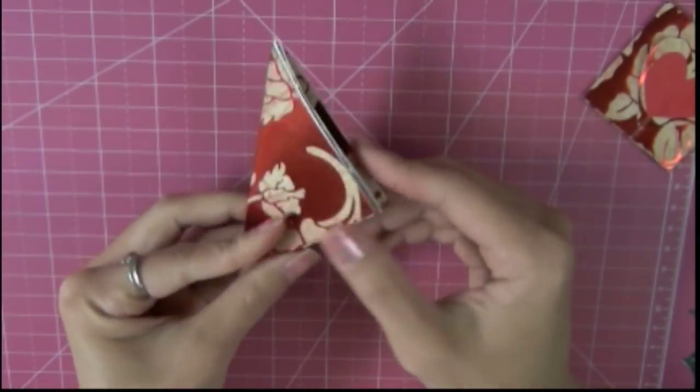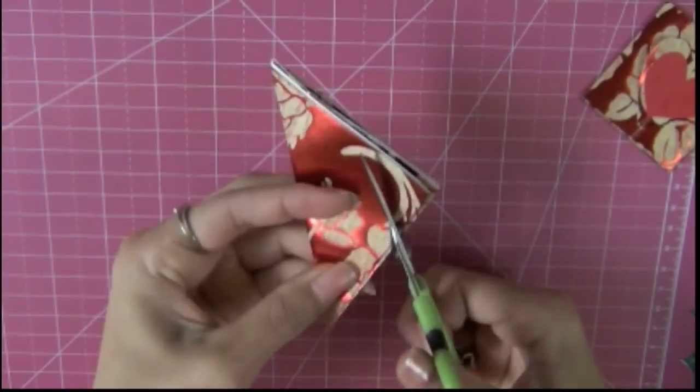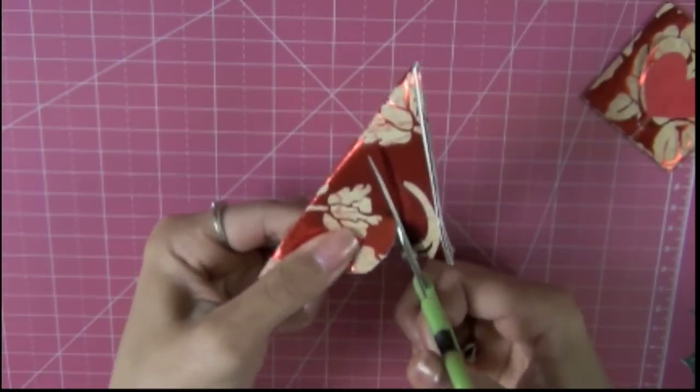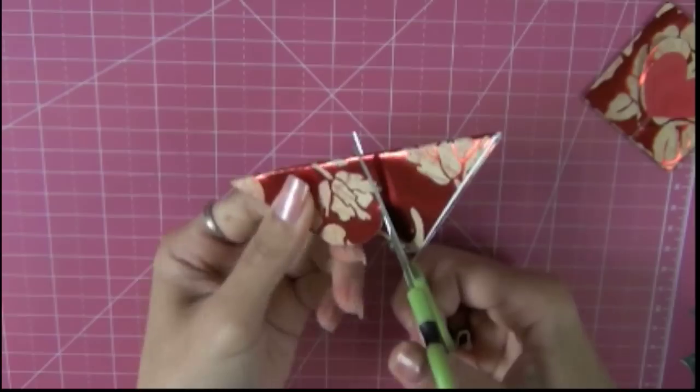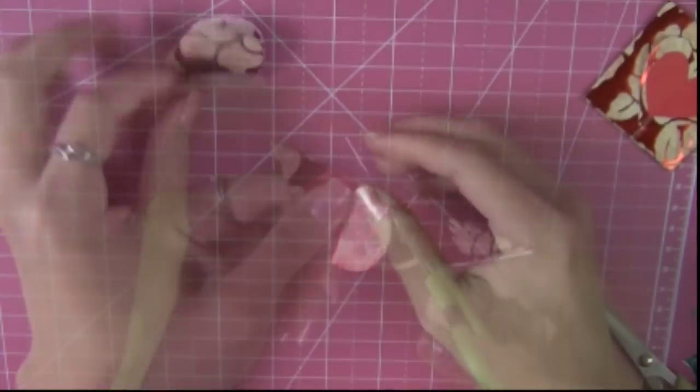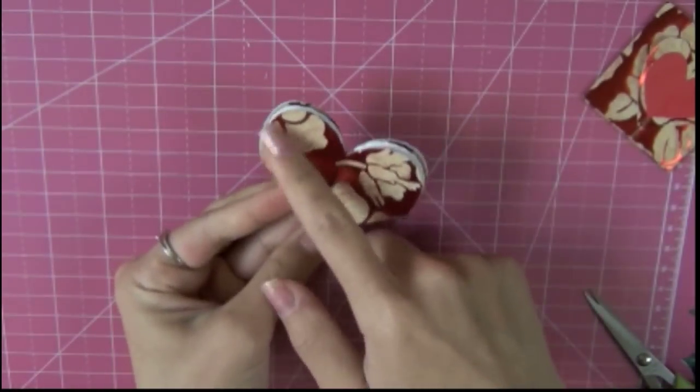Fold the square to the opposite side to form a triangle. Think of it as if you're trying to cut half of a heart. So when you open it, it looks like four hearts forming together.